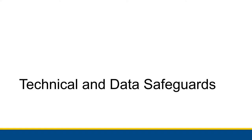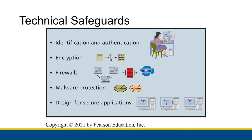Hey everyone. So in the last video, we talked about how organizations can use technical data and human safeguards in order to try to protect their information systems. So in this video, we're going to focus on the technical and the data safeguards. For the technical safeguards, there are five types we will go into some detail about: identification and authentication, encryption, firewalls, malware protection, and designing for secure applications.